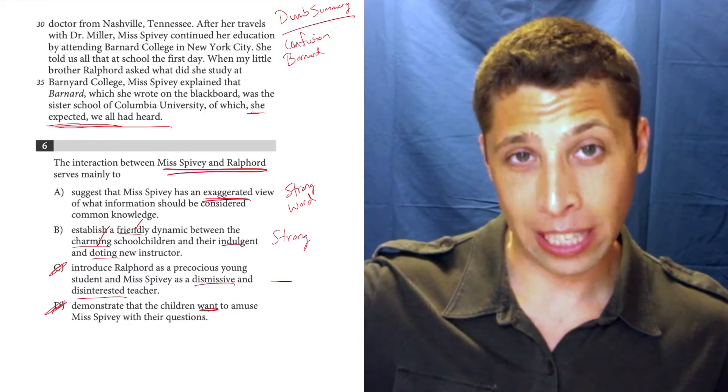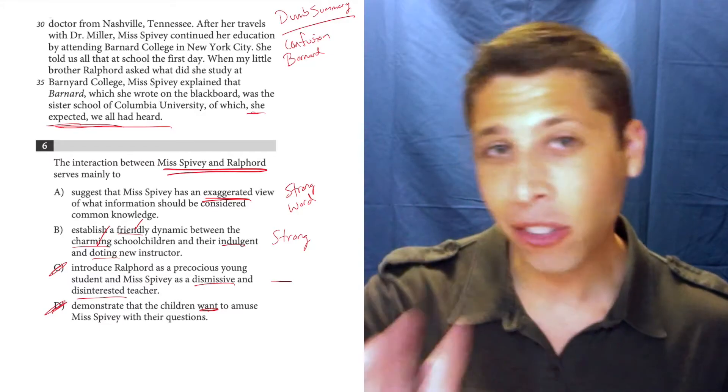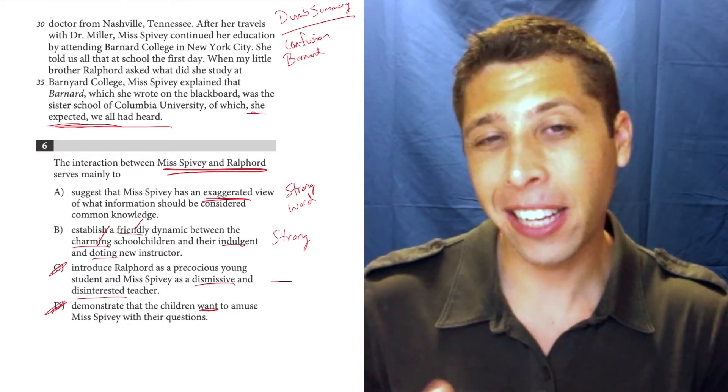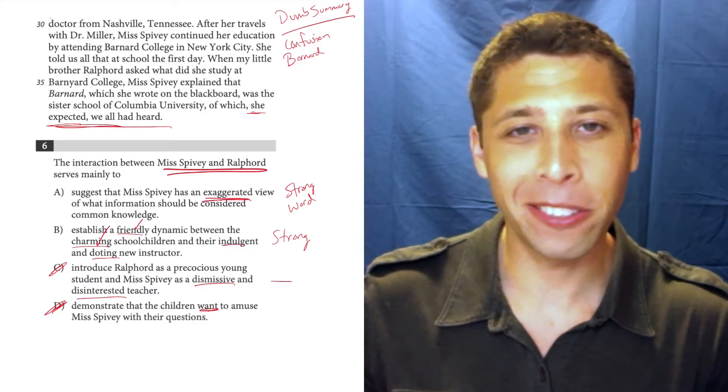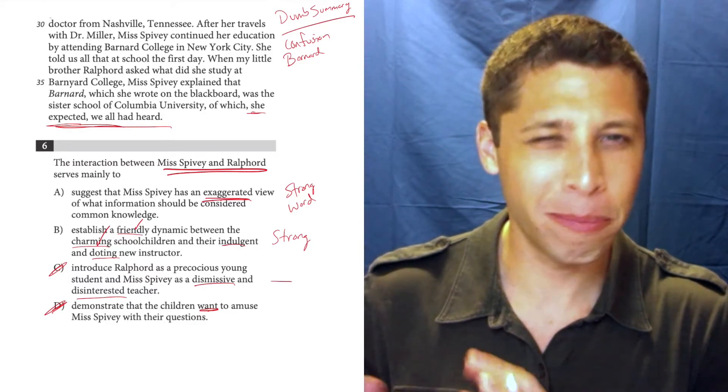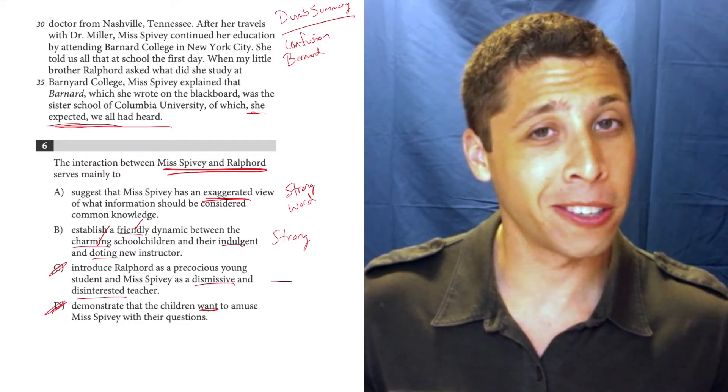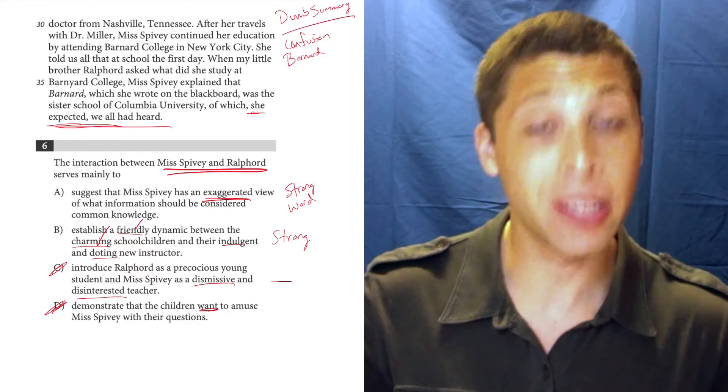What she expected. So we don't know what the kids are thinking, but we actually do know what Miss Spivey is thinking. She's kind of like a little just mad at Ralford, playfully so, but a little mad at him for not knowing what Barnard College is, and Columbia University.